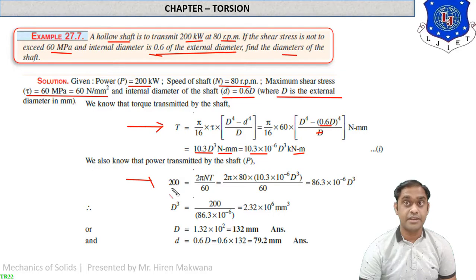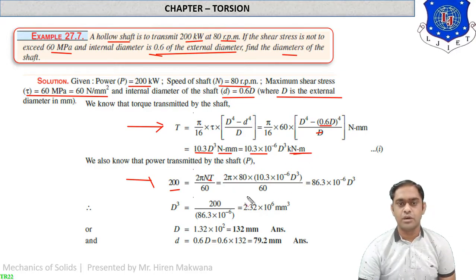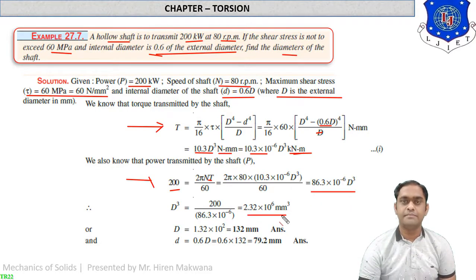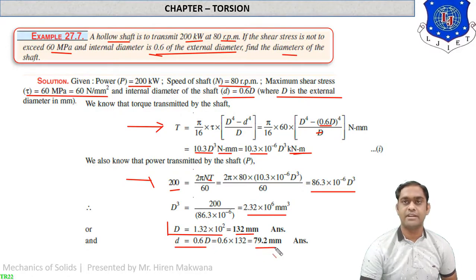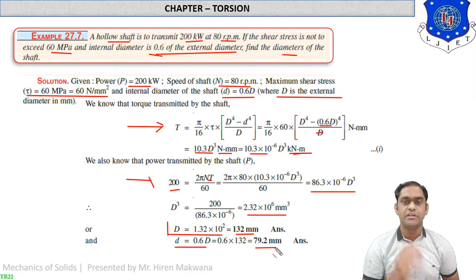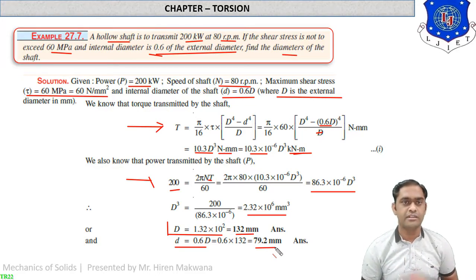Since power P = 200 kW, use P = 2πNT/60 to find T. With torque in kN·m, power is in kW. Substituting all values, only D is unknown. By simplification, D = 1.32 × 10² = 132 mm. Then internal diameter d = 0.6 × 132 = 79.2 mm. This is a very important numerical in which both inner and outer diameters of a hollow shaft are found.